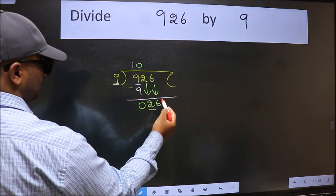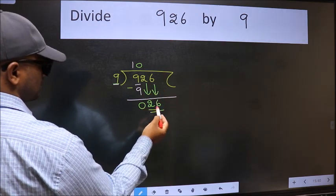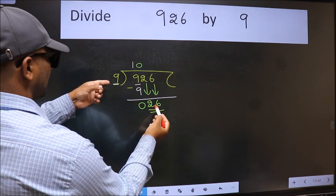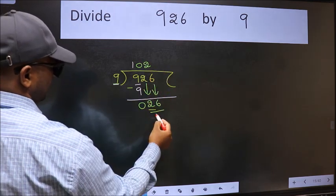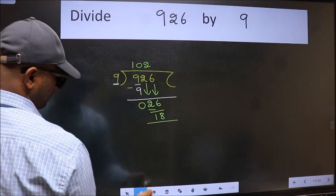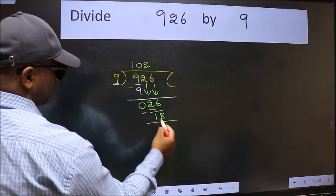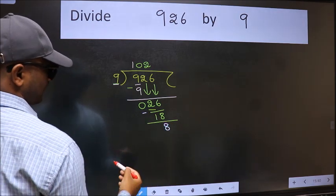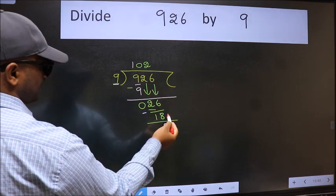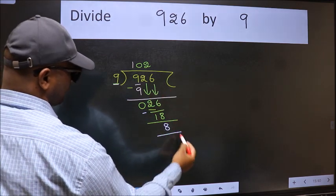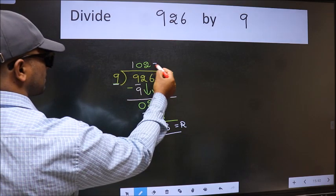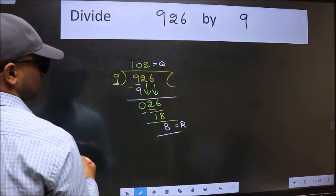Now 26. A number close to 26 in the nine table is nine twos, 18. Now we should subtract, we get eight. No more numbers to bring down, so we stop here. This is our remainder and this is our quotient.